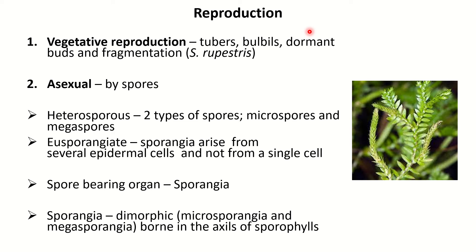Asexual reproduction takes place by spores. Selaginella is a heterosporous type of plant, meaning two types of spores are produced: microspores, which are smaller in size and the male counterpart, and megaspores, which are larger in size and the female counterpart. These are eusporangiate plants, meaning sporangia arise from multiple epidermal cells. If developing from a single cell, it is called leptosporangiate.